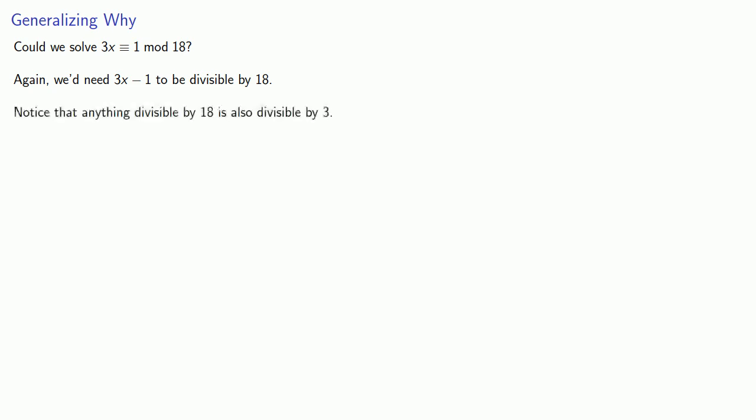And notice that anything divisible by 18 is also divisible by 3. But since 3X is divisible by 3, then 3X minus 1 can't be, because it's 1 less than a number divisible by 3. And so it follows that 3X minus 1 can't be divisible by 18 either, and this problem is unsolvable.